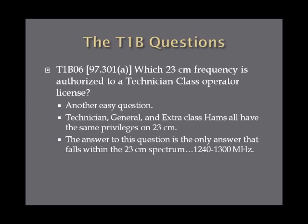Which 23-centimeter frequency is authorized to a technician class operator license? You don't have to memorize anything special for this one outside the frequency range. Technician, general, and extra class hams all have the same privileges on 23 centimeters. The answer is the only one that falls in that spectrum — 1240 to 1300 MHz.